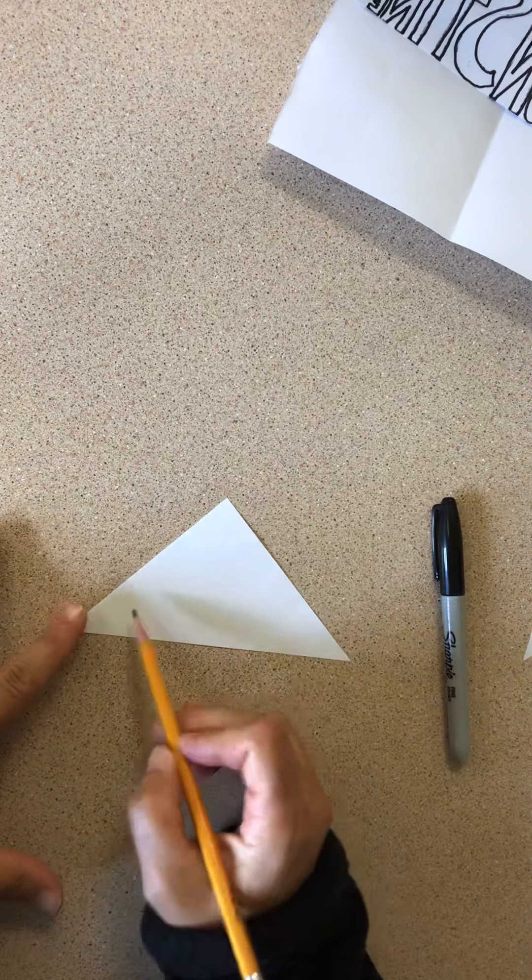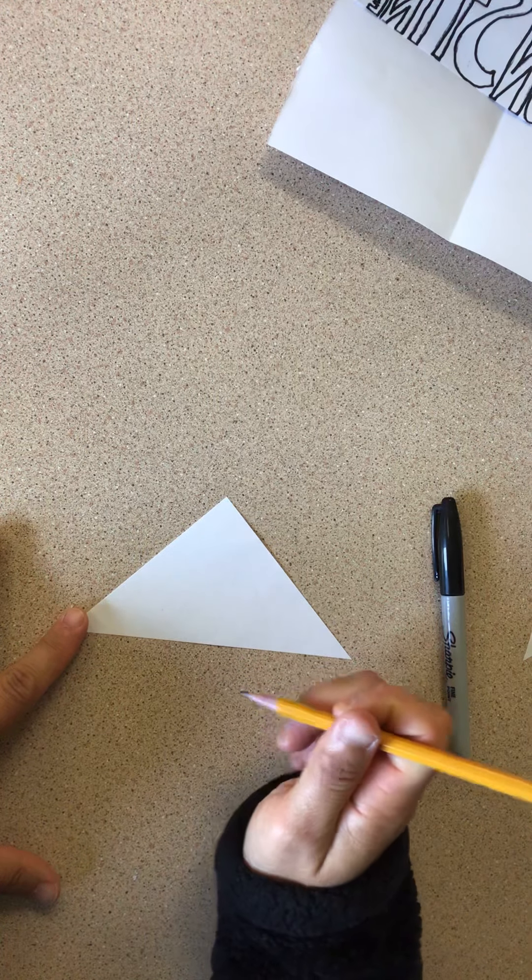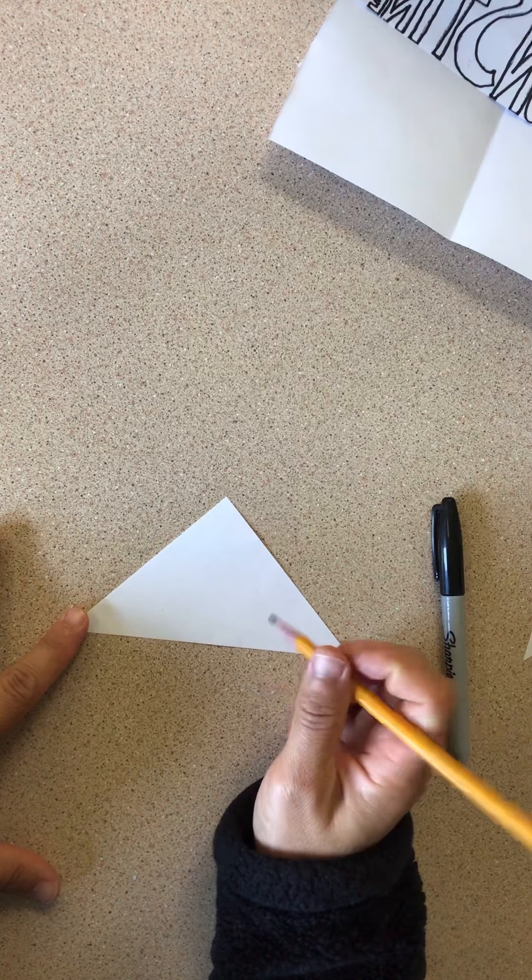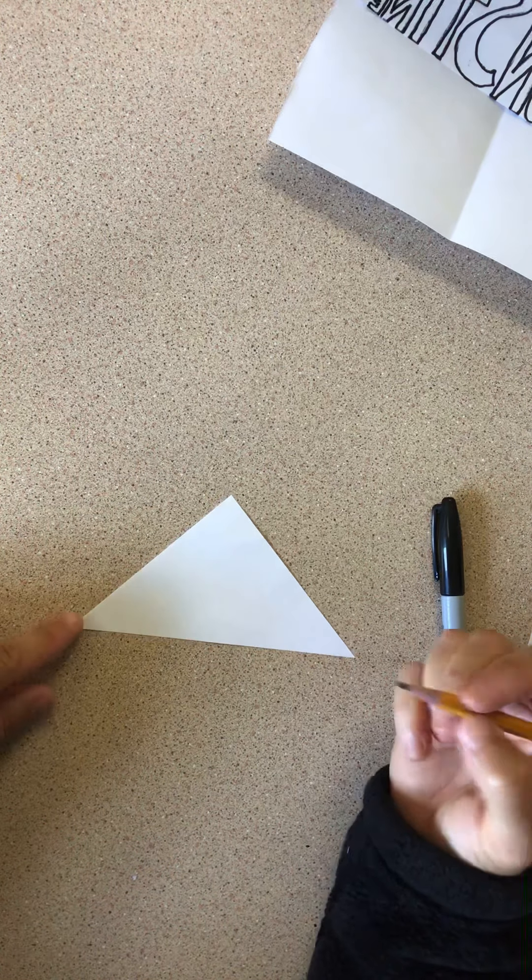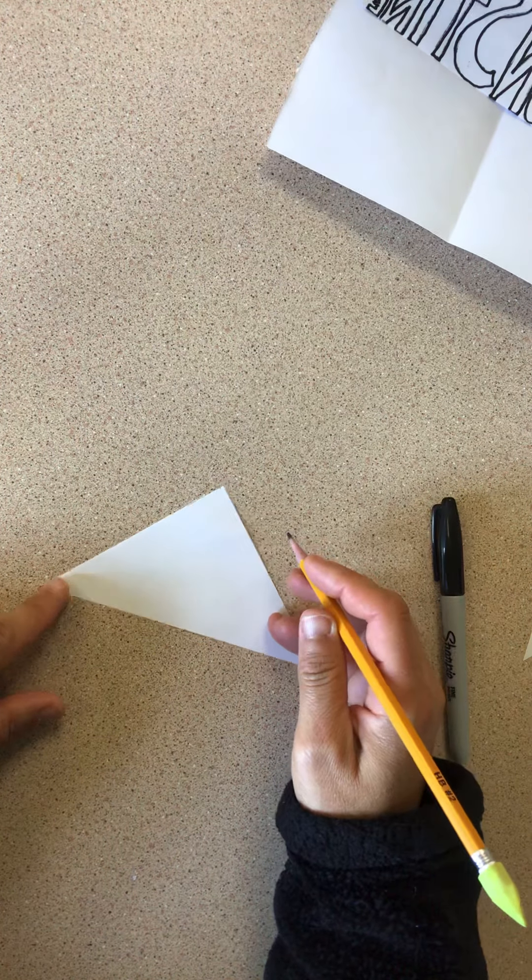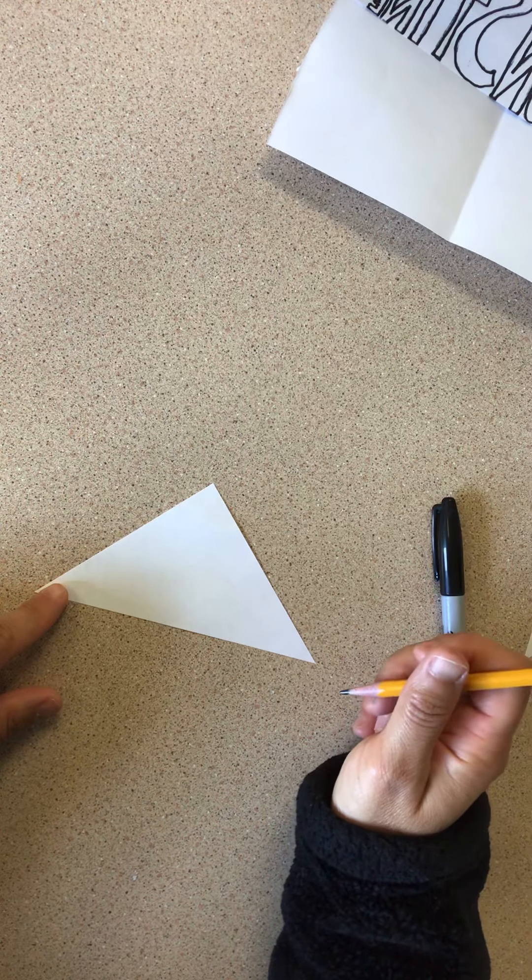What you're going to do is you're going to just draw really lightly, in case you make a mistake, that way we can erase it. I'm going to make my block letters, and I'll go over block letters with you on the board if I didn't already.